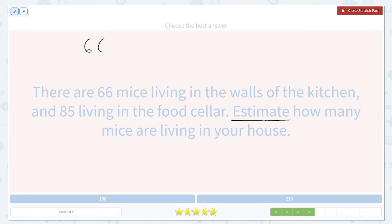So we have 66. We have 85. And we want to approximate the sum. So 66. Six is more than five. So it rounds up to 70.